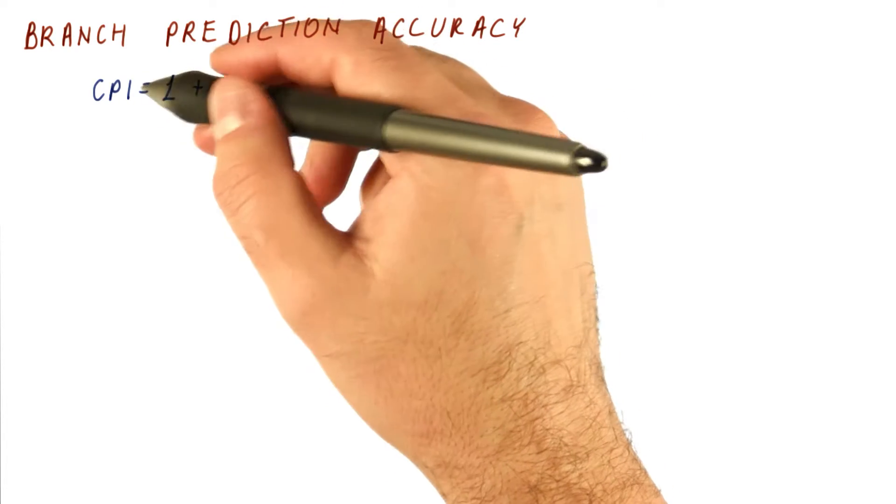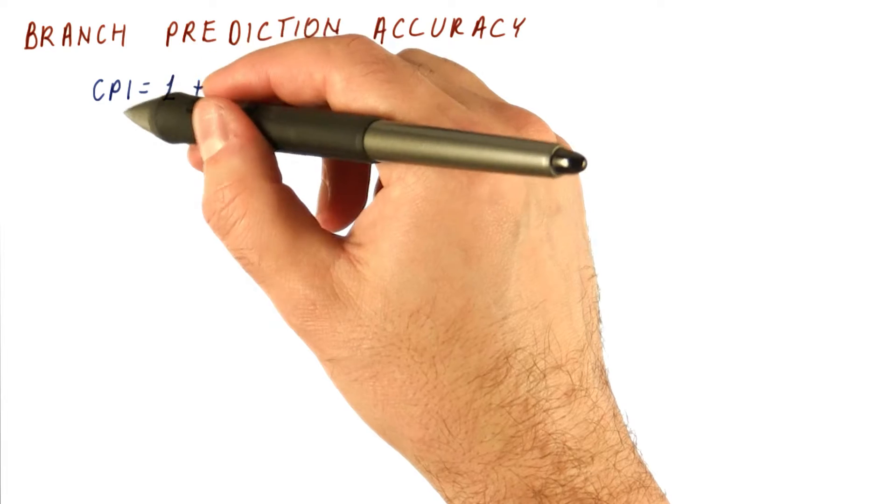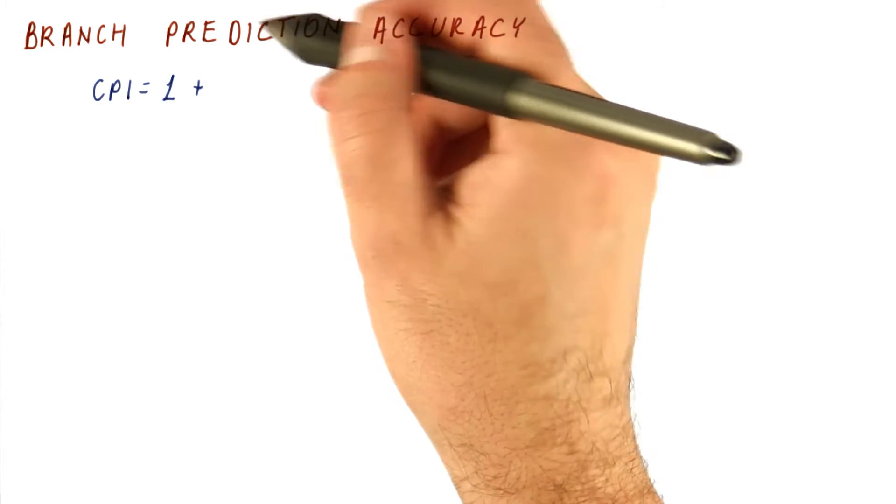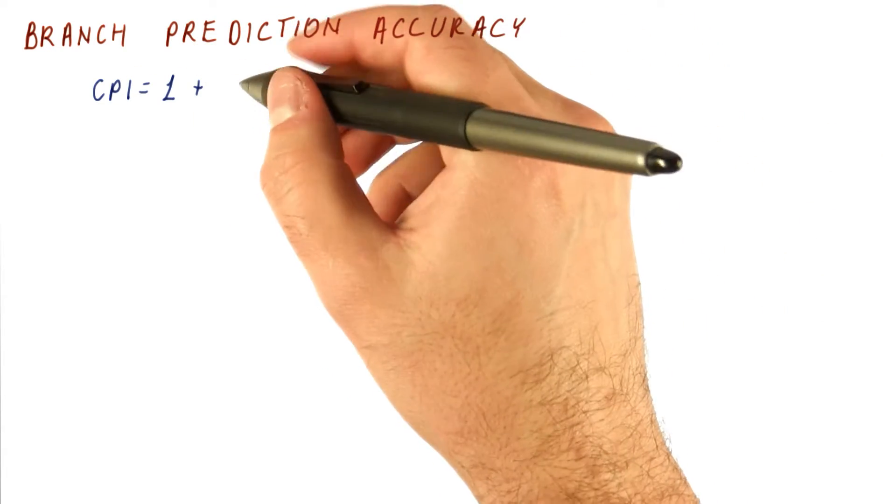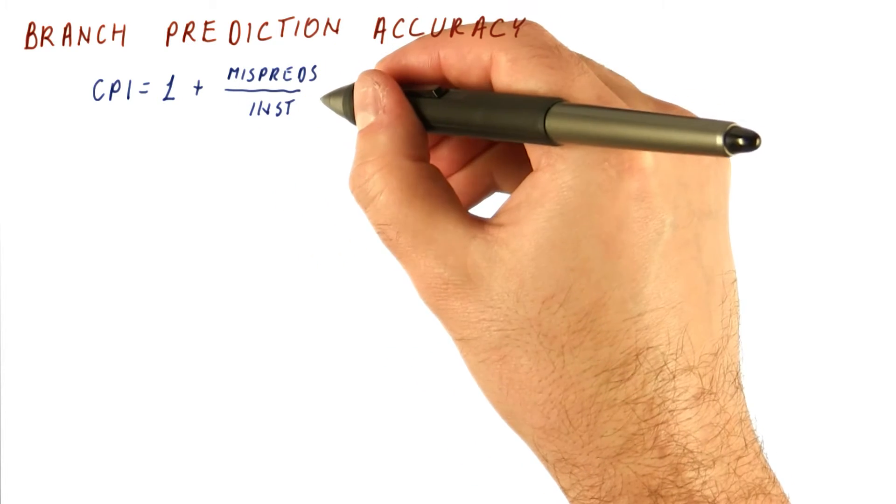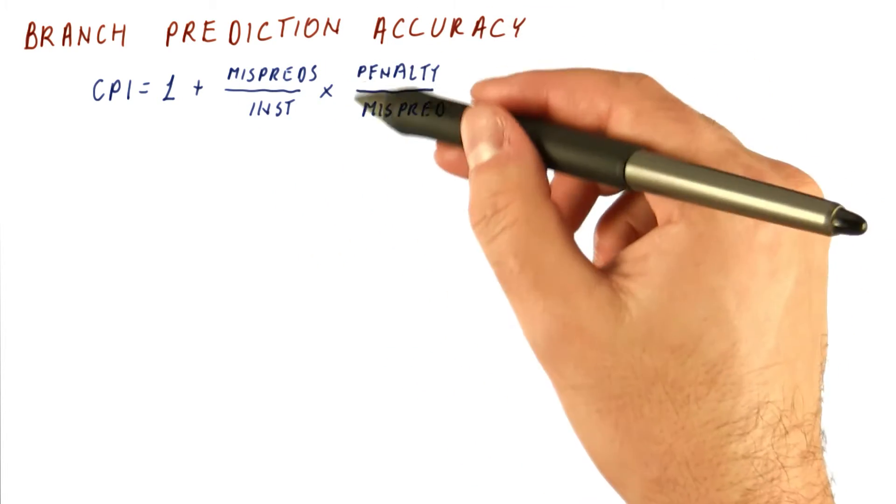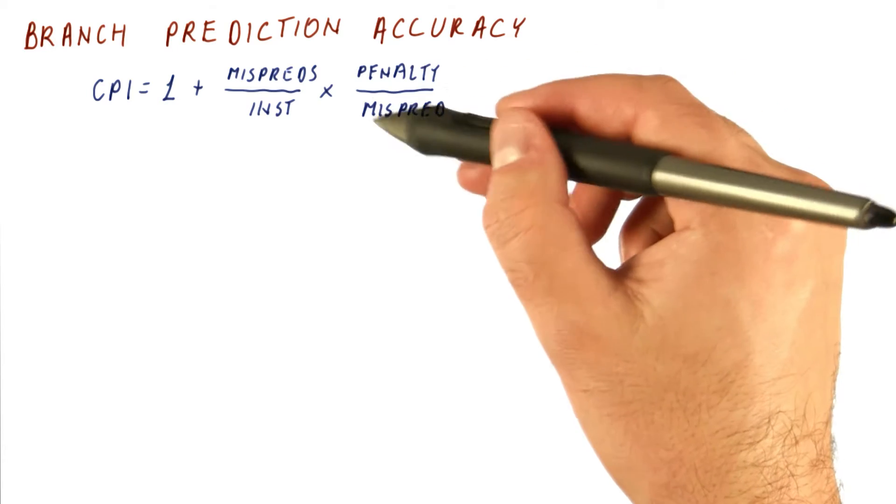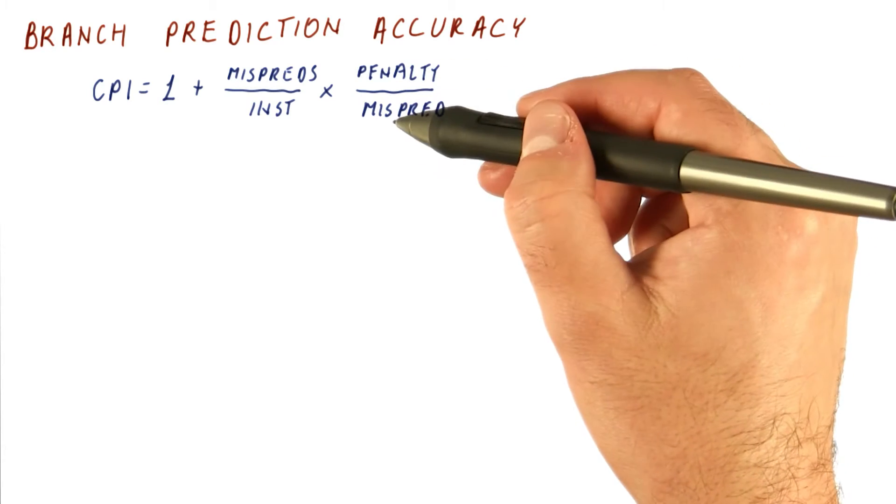Plus the cycles we add on average per instruction because of branch mispredictions. And that can be written as how often we have mispredictions times the penalty we pay in terms of cycles every time we have a misprediction.